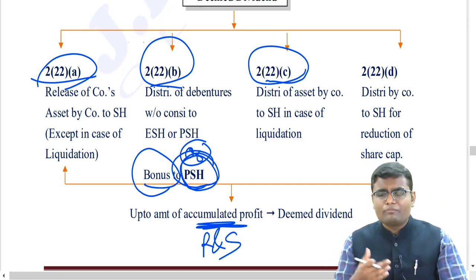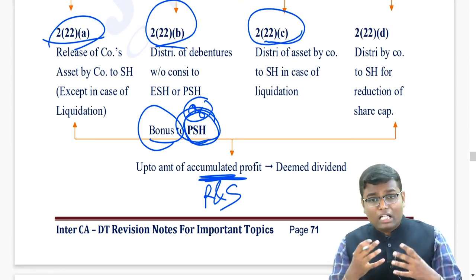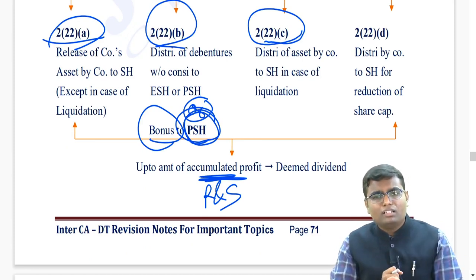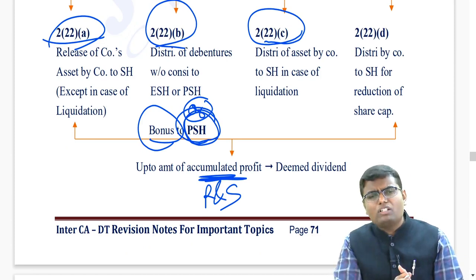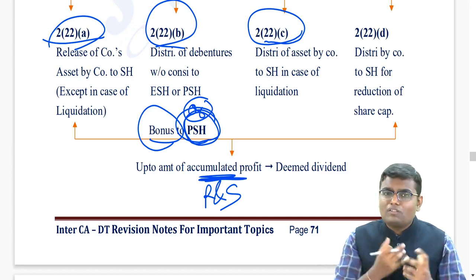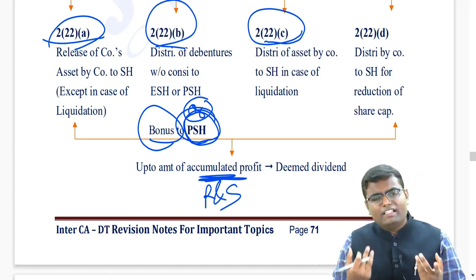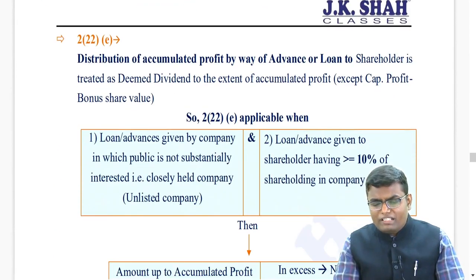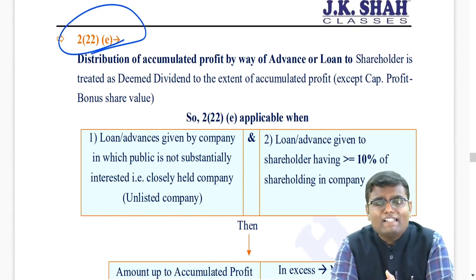Section 2(22)(c) we already saw. And last - 2(22)(d) - whenever a company does reduction of share capital without taking away the share capital, just reducing the value, the paid-up capital, and paying some amount against that, it is also called deemed dividend, because a capital asset is not transferred so capital gain cannot be attracted. Whatever money the shareholder is receiving is deemed dividend up to the amount of reserve and surplus.